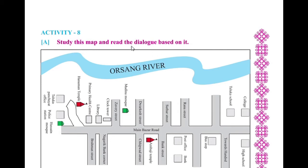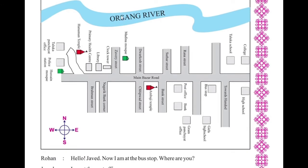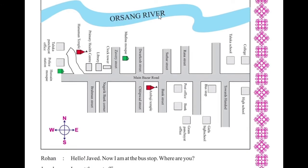Let's study this map and read the dialogue based on it. Today we are going to read the dialogue based on it. This is the Orsang River. This is the first college. This is the first school. This is the main road. This is the high school.